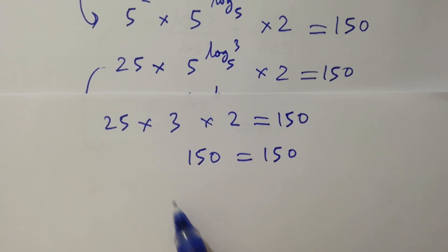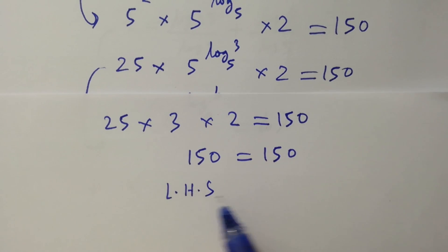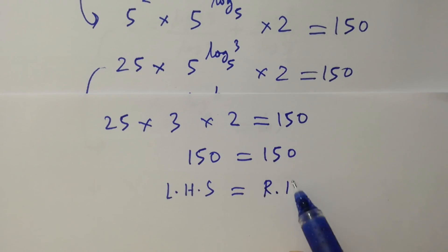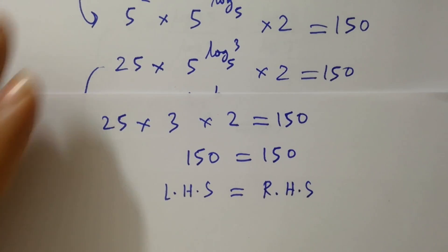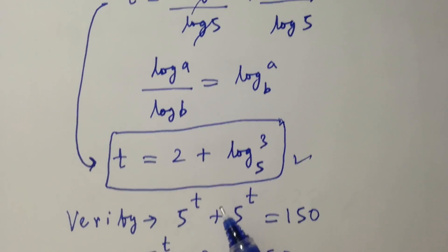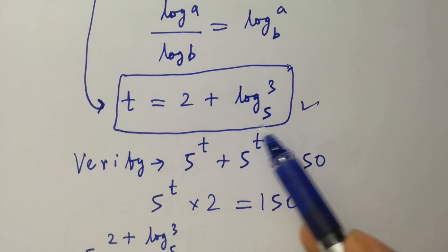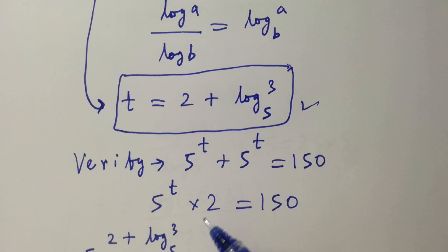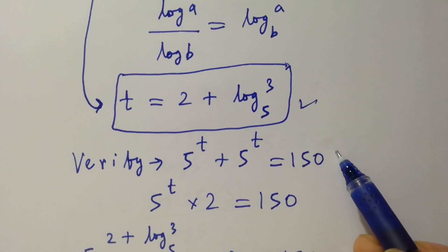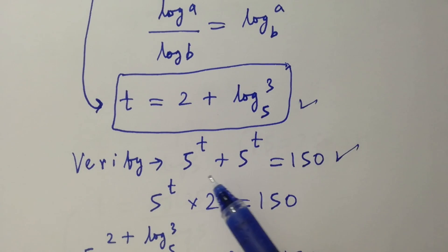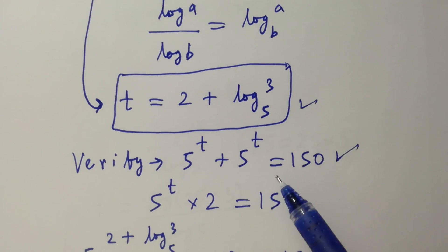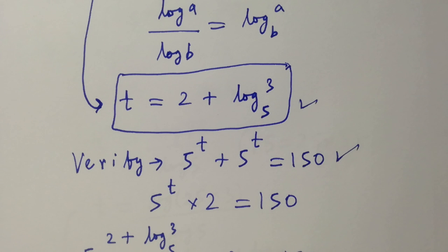Left hand side equals right hand side, which shows that the value of t equals 2 plus log 3 to the base 5 satisfies this equation of 5 to the power t plus 5 to the power t equals 150. Thanks for watching this video. Please subscribe to this channel to get notifications of my new videos. Okay, bye.